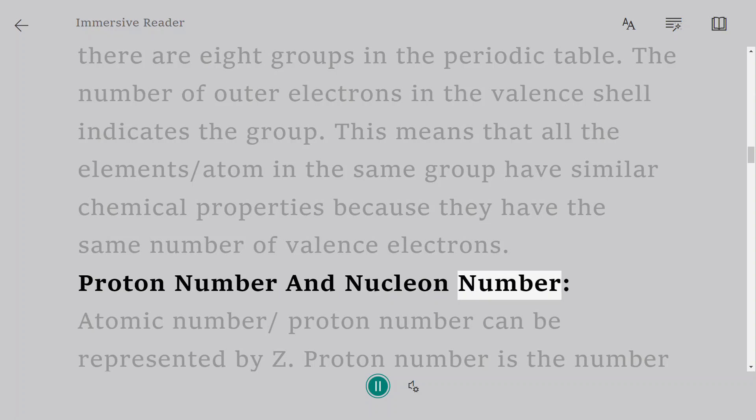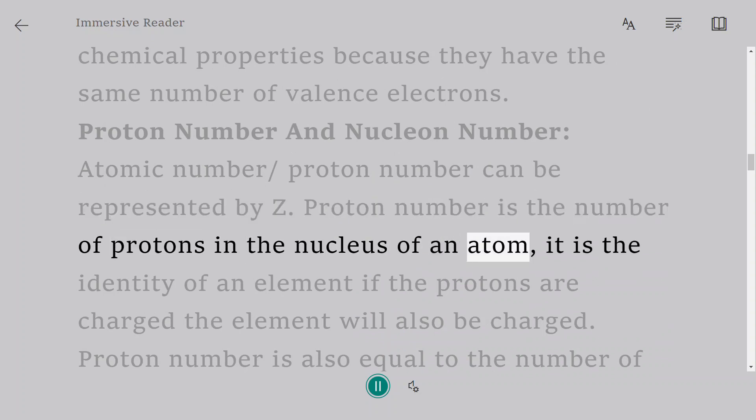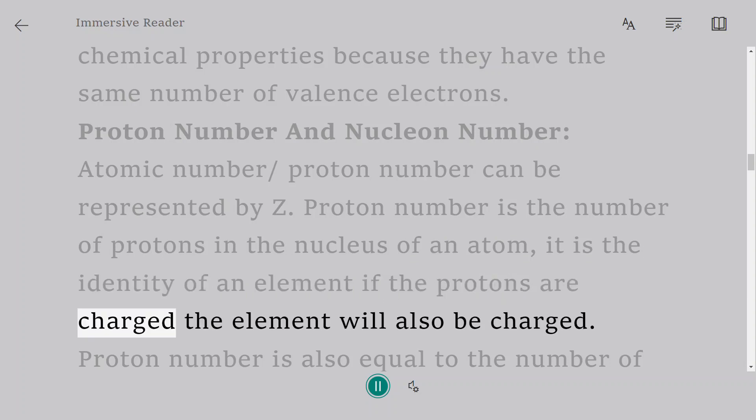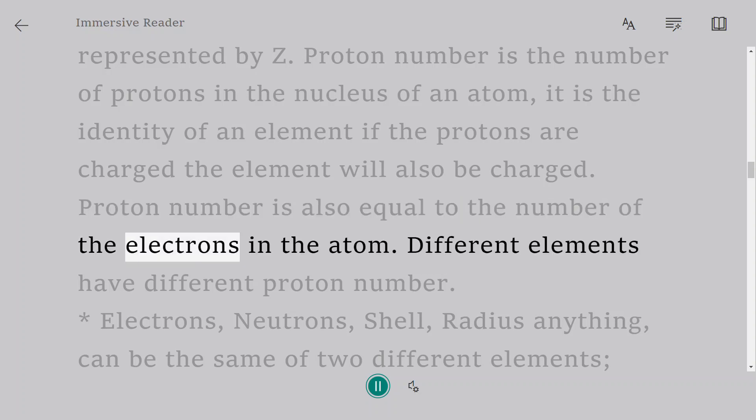Proton number and nucleon number: Atomic number/proton number can be represented by Z. Proton number is the number of protons in the nucleus of an atom. It is the identity of an element; if the protons are changed, the element will also be changed. Proton number is also equal to the number of electrons in the atom.